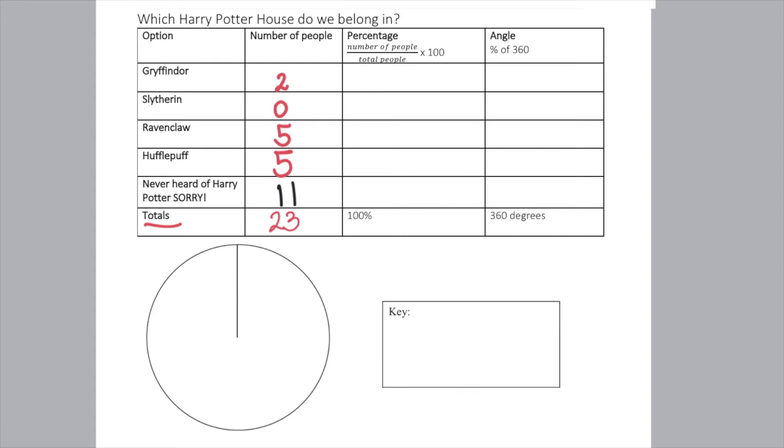Now we can start preparing our sectors of the graph because we know everything's out of 23. For Gryffindor, 2 out of 23 chose Gryffindor, so two twenty-thirds. Slytherin is zero twenty-thirds, Ravenclaw is five twenty-thirds, Hufflepuff is five twenty-thirds, and never heard of Harry Potter is eleven twenty-thirds. Now it's just a matter of splitting the circle.